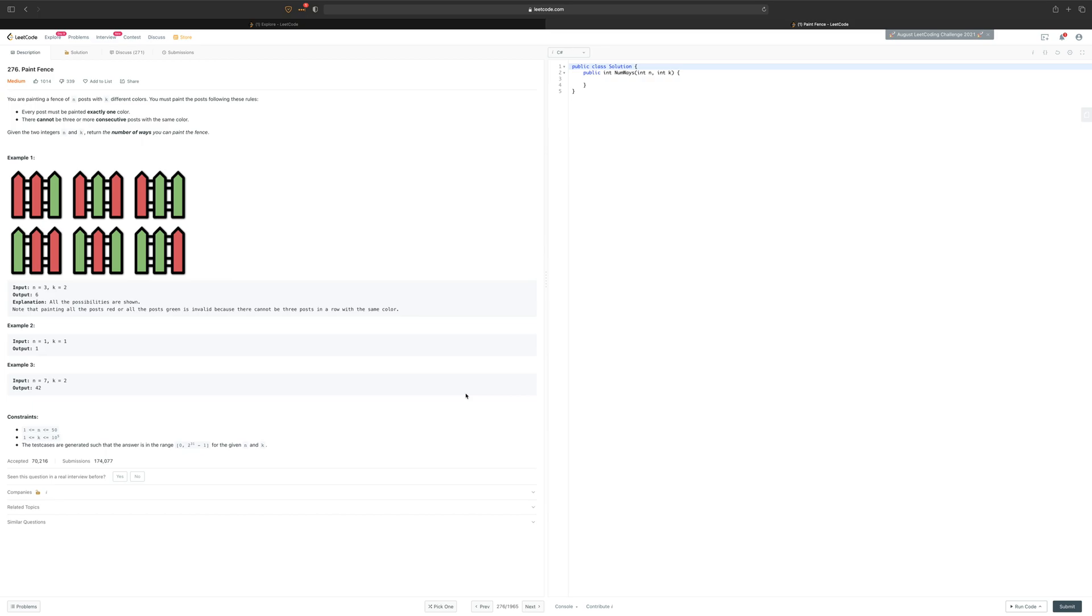The problem statement is you are painting a fence of N posts and K different colors. You must paint the posts following these rules. Each post must be exactly one color.